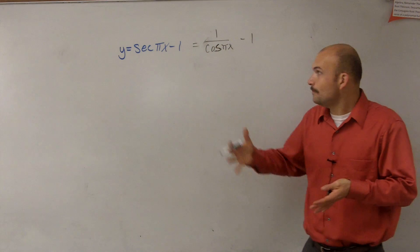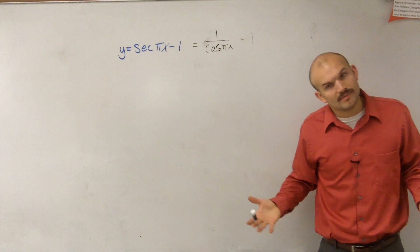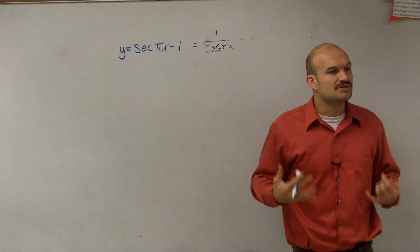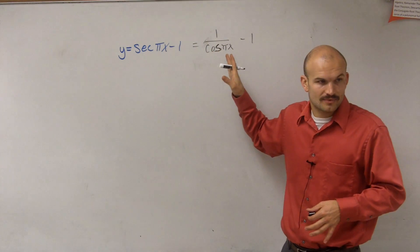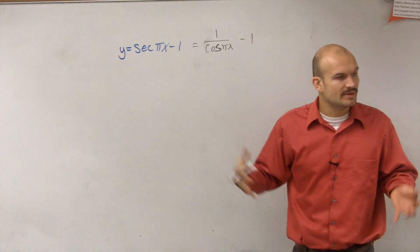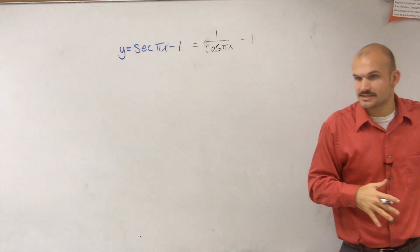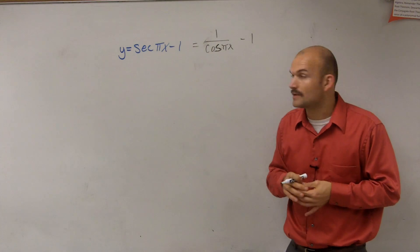So therefore, to help us graph the secant, what we're actually going to do is graph the cosine. For a minute, I'd like you to forget we're talking about secant, and just see how can we graph the cosine of pi x minus 1. We're going to go back to what we worked on in the last assignment and work on graphing just the cosine of pi x minus 1.